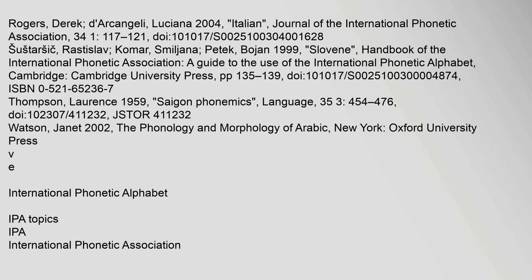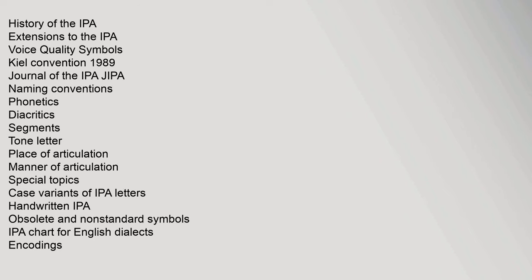History of the IPA; Extensions to the IPA; Voice Quality Symbols; Keele Convention 1989; Journal of the IPA (JIPA); Naming Conventions; Phonetics; Diacritics; Segments; Tone Letters; Place of Articulation; Manner of Articulation; Special Topics; Case Variants of IPA Letters; Handwritten IPA; Obsolete and non-standard symbols.